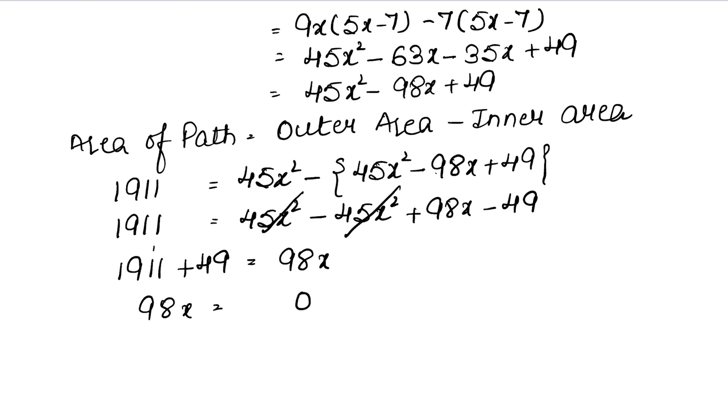98x equals 1960. Dividing: 1960 ÷ 98. Working through the division: 2 times 4 is 8, 2 times 9 is 18, giving us 20. Therefore x = 20.